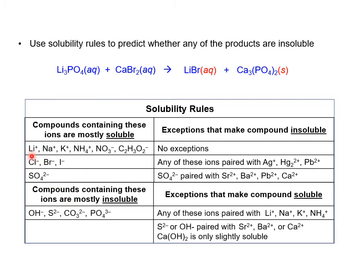From the solubility chart, lithium bromide is aqueous because any compound containing lithium is soluble, and soluble means aqueous. Calcium phosphate, on the other hand, shows that phosphate is insoluble and calcium is not an exception, so calcium phosphate is a solid. Anything that is insoluble on the solubility chart forms a solid product for the ionic compound.